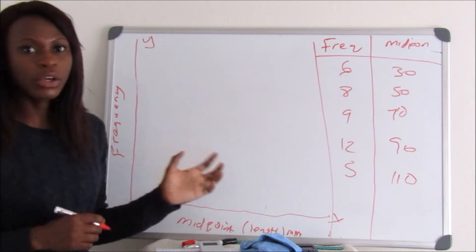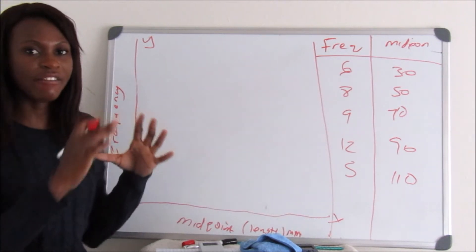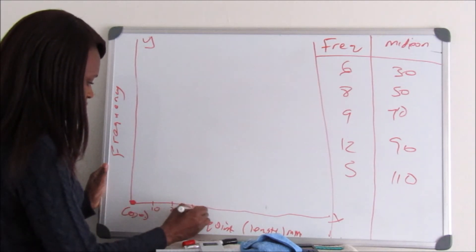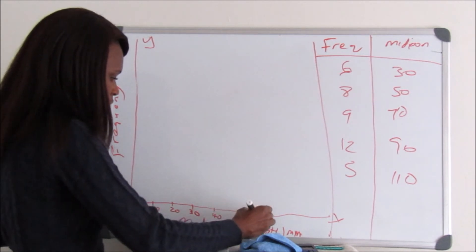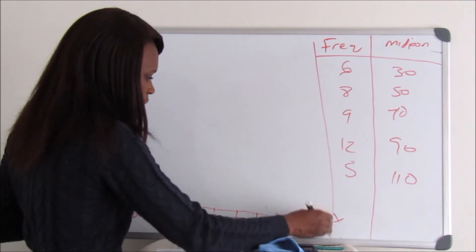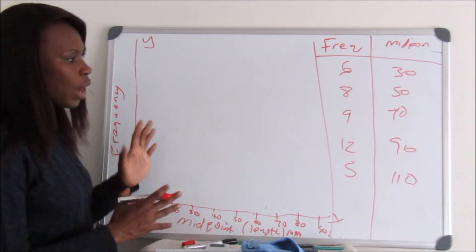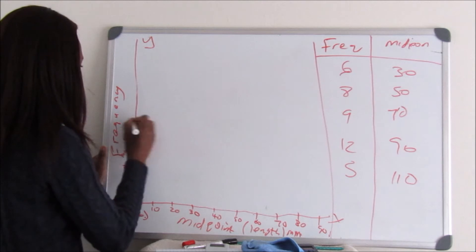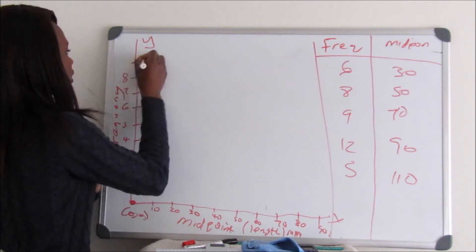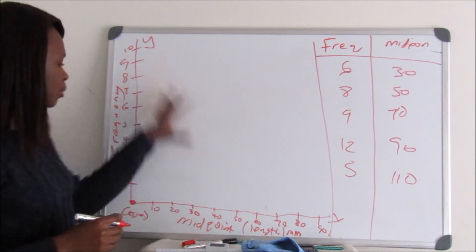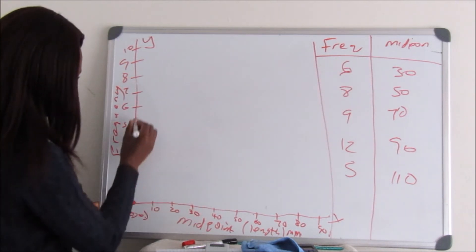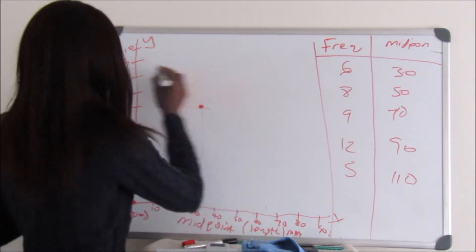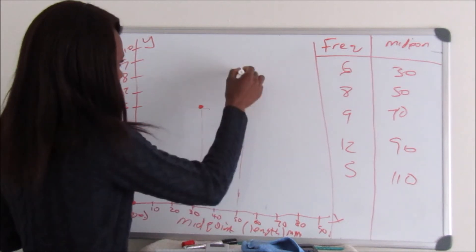Remember the frequency polygon must start from the x-axis and end at the x-axis to form a closed shape. The origin is 0,0. We plot point (30, 6), then point (50, 8), then point (70, 9).